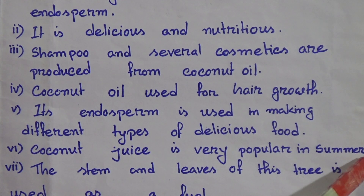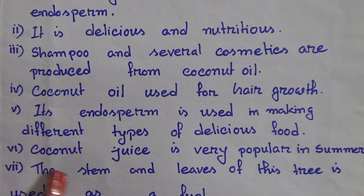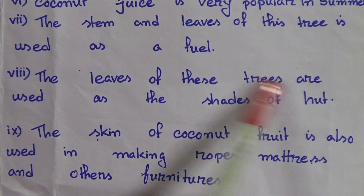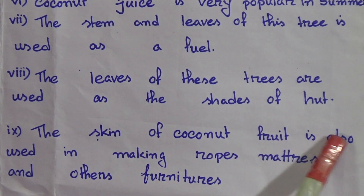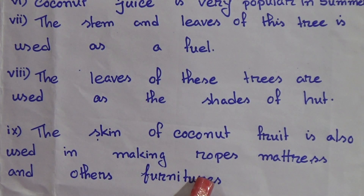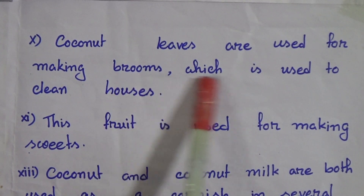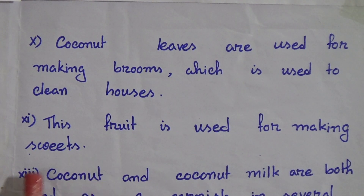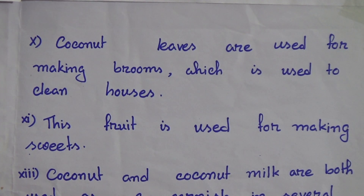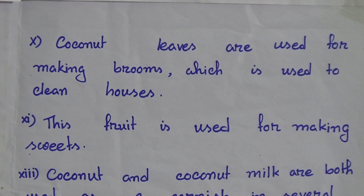Seven: the stem and leaves of the coconut tree are used as fuel. Eight: the leaves are used as the shade of huts. Nine: the skin of coconut fruit is used in making ropes, mattresses, and other furniture. Ten: coconut leaves are used for making brooms to clean houses. Eleven: the fruit is used for making sweets. Twelve: coconut and coconut milk are both used as a garnish in several traditional dishes.